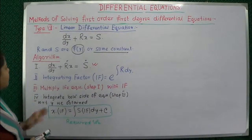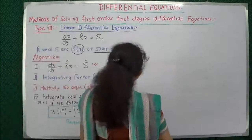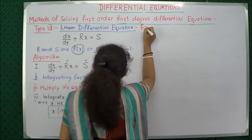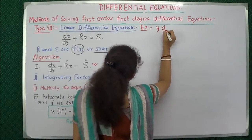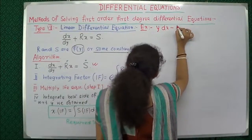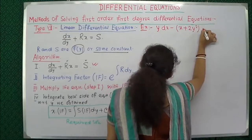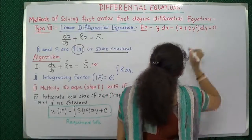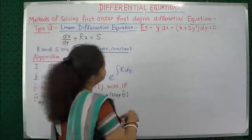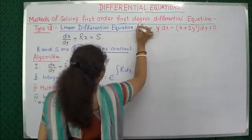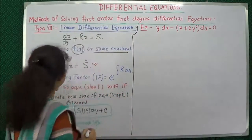To understand this algorithm clearly, let us take an example: y dx minus (x plus 2y²) dy equals 0. We will solve this equation using the algorithm.